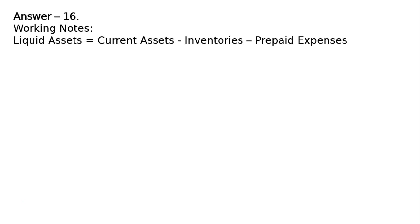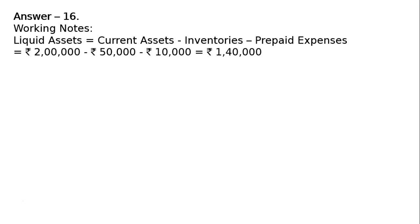In the working notes, liquid assets equals current assets minus inventories minus prepaid expenses. We exclude stock and prepaid expenses from current assets to get liquid assets. That is rupees 2 lakh minus rupees 50,000 minus rupees 10,000, giving liquid assets of rupees 1 lakh 40,000. Current liabilities is given as rupees 70,000.